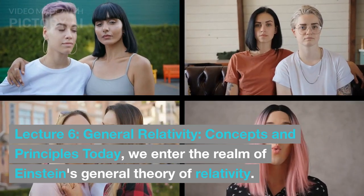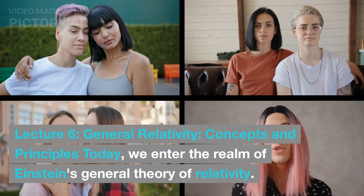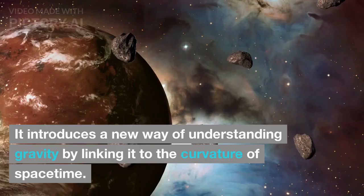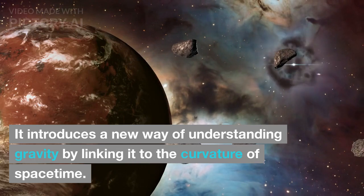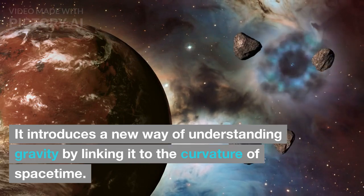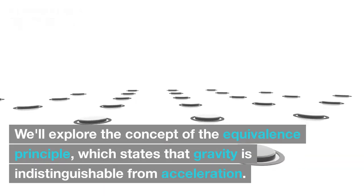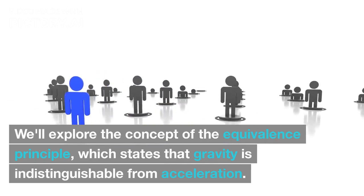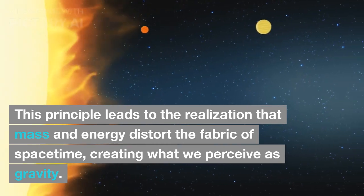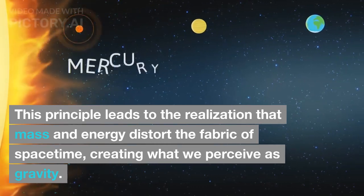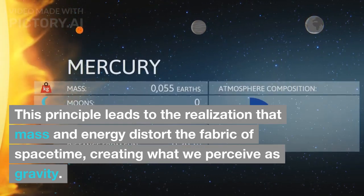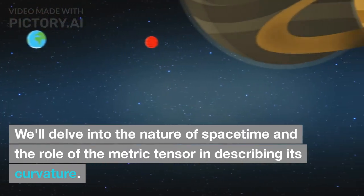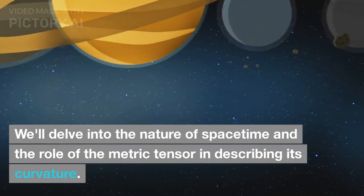Lecture 6: General Relativity — Concepts and Principles. Today, we enter the realm of Einstein's general theory of relativity. It introduces a new way of understanding gravity by linking it to the curvature of spacetime. We'll explore the concept of the equivalence principle, which states that gravity is indistinguishable from acceleration. This principle leads to the realization that mass and energy distort the fabric of spacetime, creating what we perceive as gravity. We'll delve into the nature of spacetime and the role of the metric tensor in describing its curvature.